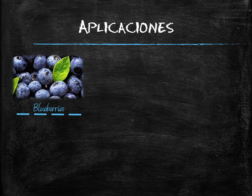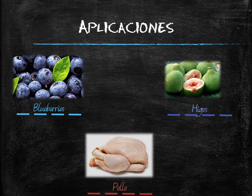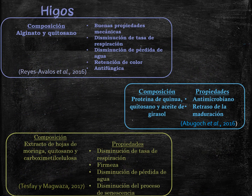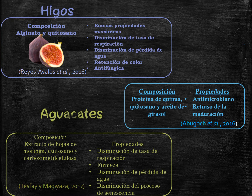Application examples include blueberries, avocados, figs, port salut cheese, chicken, and trout. An edible coating composed of alginate and chitosan was applied on figs, yielding good mechanical properties, a decrease in respiration rate and water loss, retention of color, and antifungal properties. Another edible coating made of quinoa protein, chitosan, and sunflower oil was applied on blueberries, displaying antimicrobial properties and a delay in ripening.